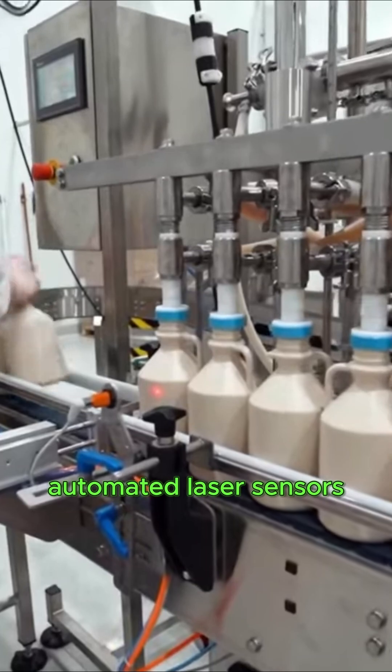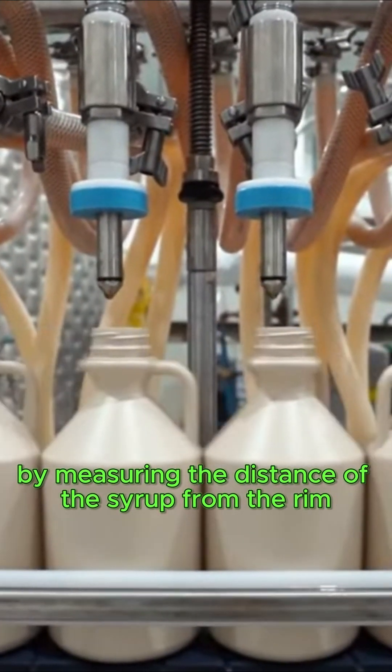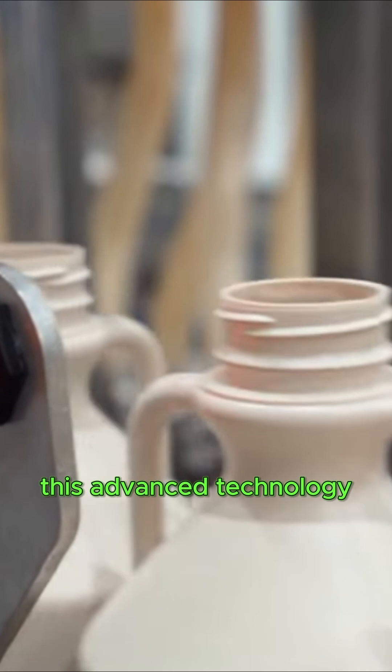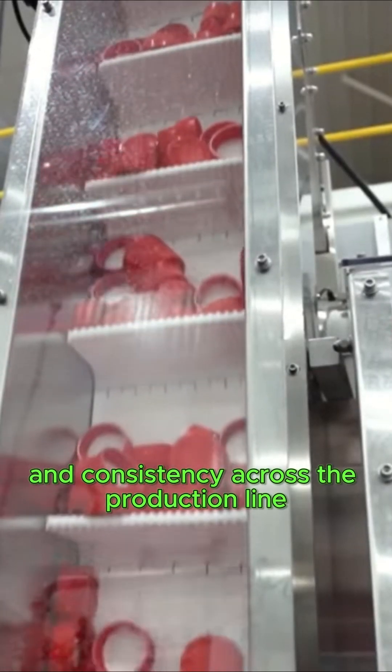Automated laser sensors are employed to evaluate the fill level in plastic bottles by measuring the distance of the syrup from the rim. This advanced technology contributes significantly to achieving precise filling and consistency across the production line.